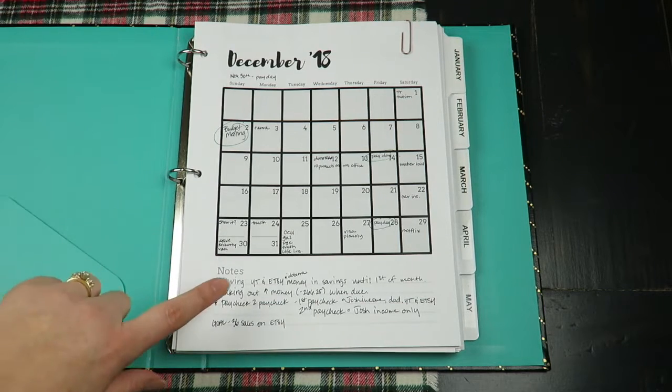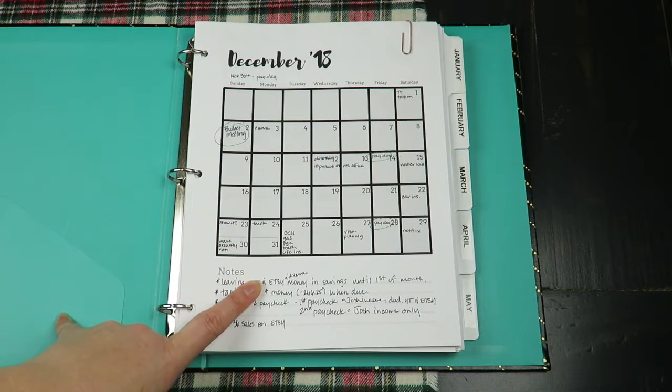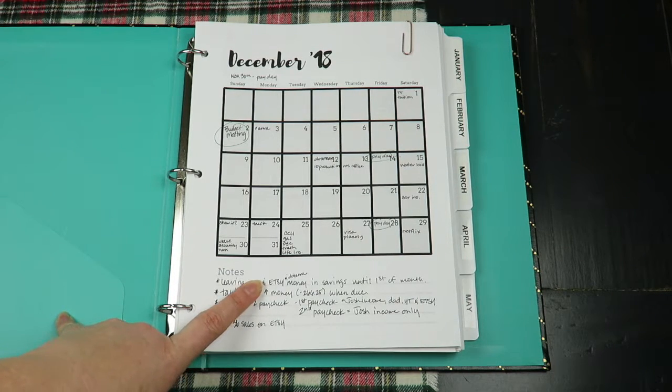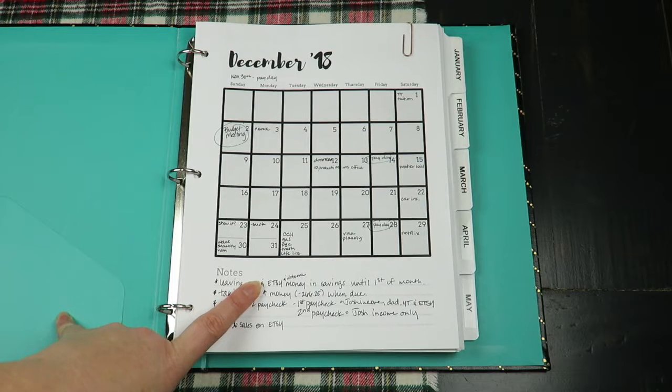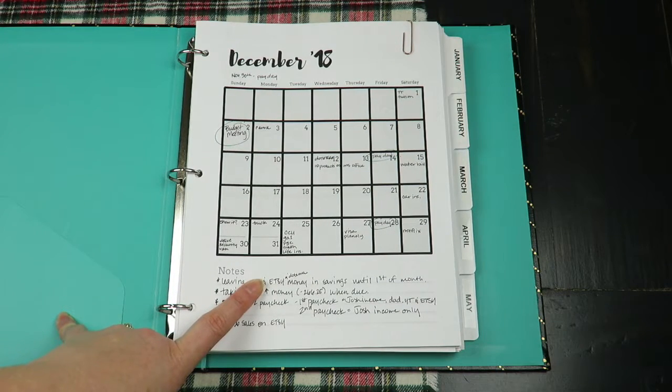Notes: We want to leave Etsy and doTERRA money in savings until the first of the month. My income was so variable. This budget is off of just my husband's income. We are saving my money throughout the whole month and then we will do it at the end of December for January's budget. Once I know exactly how much money I made, we'll leave that in our savings account and then budget with it in January.